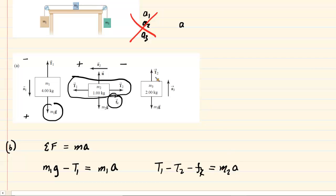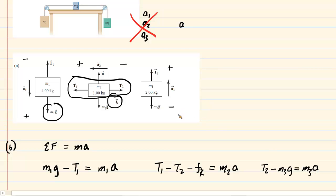Finally, for M3, which is accelerating upward — so upward is positive and downward is negative — the equation is T2 minus M3 times g equals M3 times A. These are the three Newton's second law equations we need.